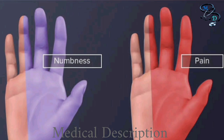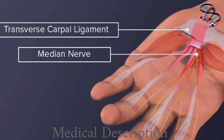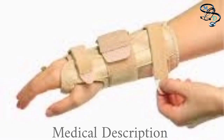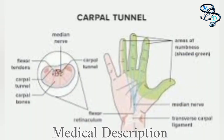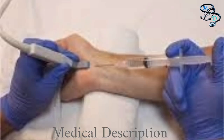Home remedies and lifestyle changes may provide temporary symptom relief. Take short, frequent breaks from repetitive hand activities. Lose weight if overweight. Rotate the wrist and stretch the palms and fingers. Take a pain reliever such as aspirin, ibuprofen, or naproxen sodium. Wear a snug — not tight — wrist splint at night, available over the counter at most pharmacies. Avoid sleeping on your hands. If pain, numbness, or weakness recurs and persists, seek your healthcare provider.